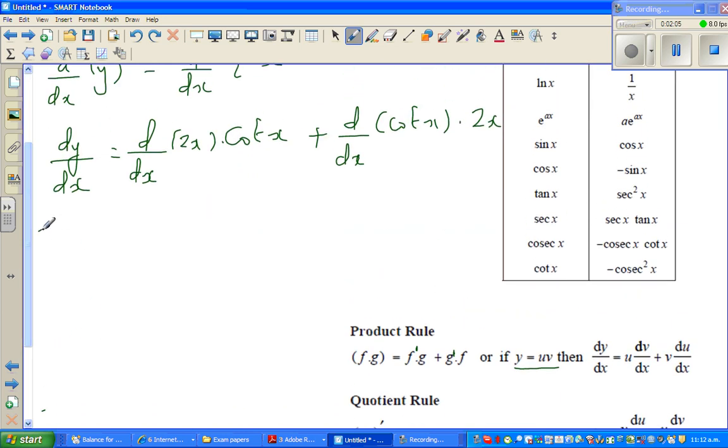Therefore, dy by dx is equal to differentiation of 2x is 2 times cot x. Just like that. Plus, the differentiation of cot x is minus cosec squared x. So that is minus cosec squared x times 2x.